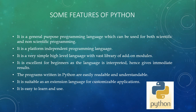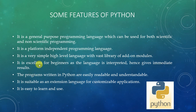For example, for finding the sum of two numbers, normally we take two numbers and write sum equals first number plus second number. But in Python, we have an add function, so we can directly use that add function to find the sum. Python is also excellent for beginners as the language is interpreted and gives immediate results, making it the best choice for learning.